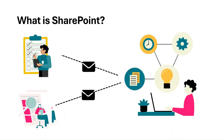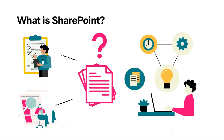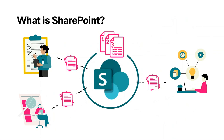For example, imagine you're working on a big project with colleagues across different departments. Everyone is emailing documents back and forth, and it's becoming difficult to tell which is the latest version and who made the last changes. SharePoint allows you to store everything in one place where everyone can access the latest updates instantly. It keeps track of versions of documents so you always know what the latest version is and who edited it. It also helps you organize company resources — whether that's policies, procedures, or project documentation — so they're easy to find when you need them.